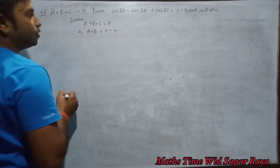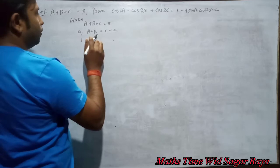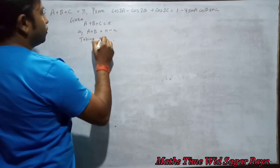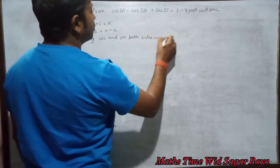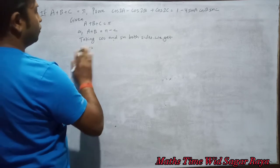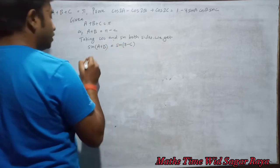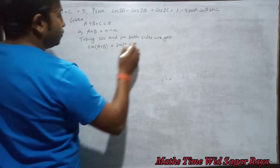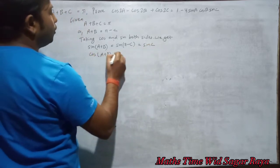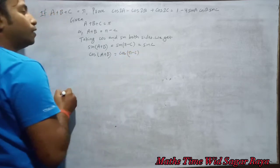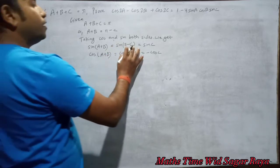From this, we can write A plus B equals pi minus C. Now taking sin and cos of both sides: sin(A+B) equals sin(pi minus C), which equals sin C. And cos(A+B) equals cos(pi minus C), which equals minus cos C — because cos(180 minus theta) equals minus cos theta, while sin(180 minus theta) equals sin theta.